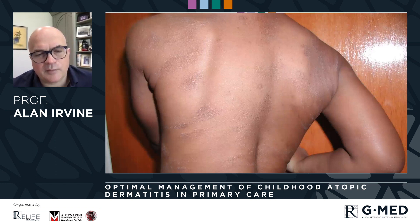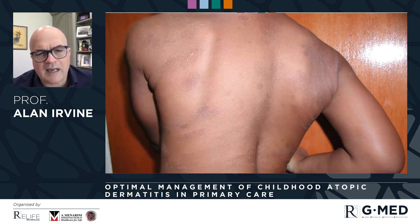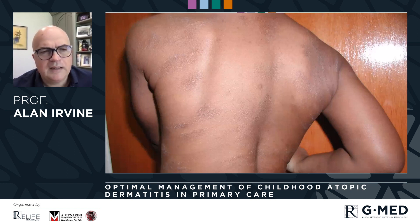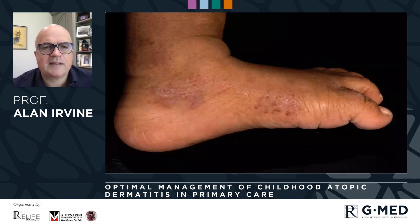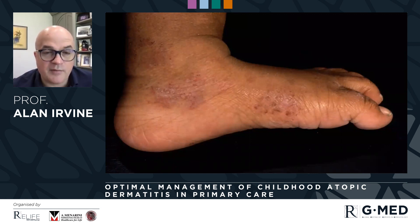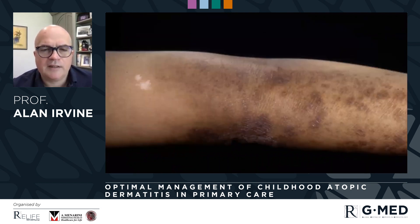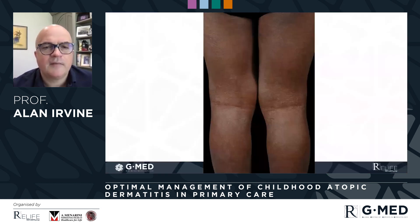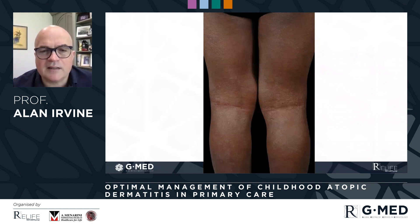A reminder that atopic dermatitis looks really different on skin of color. We'll see less redness and more of a dusky purple color, and it's really important to carefully assess skin of color, where atopic dermatitis can be very severe but can look a little differently. We can see here post-inflammatory pigmentation in an African child.